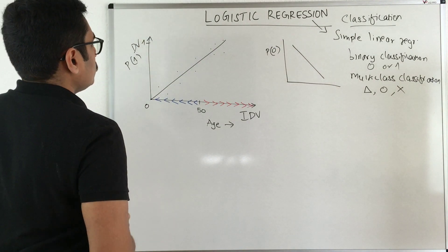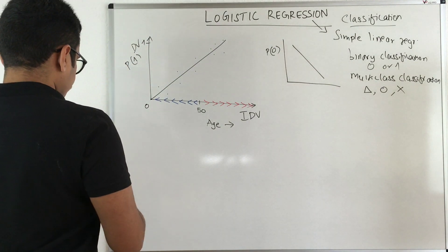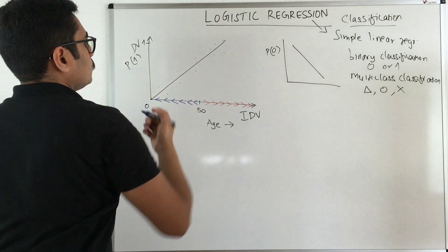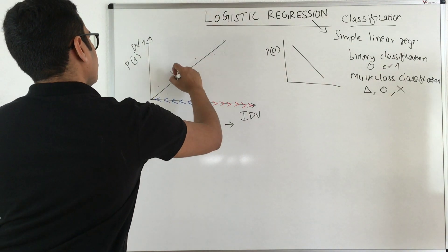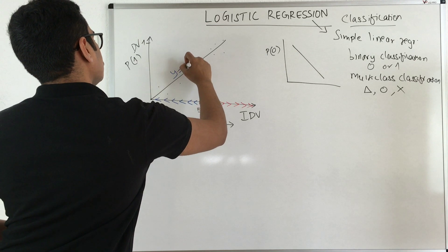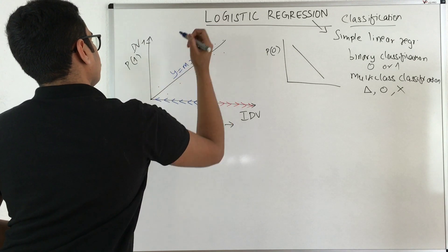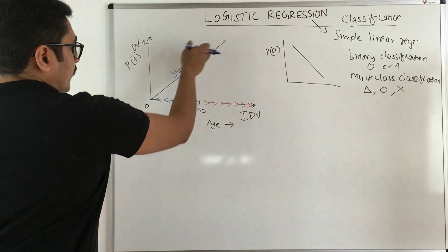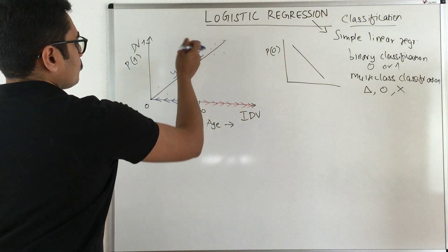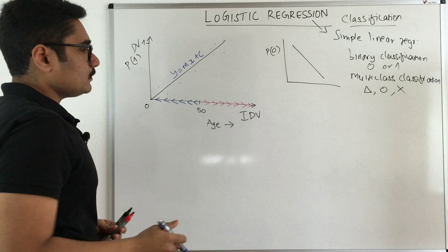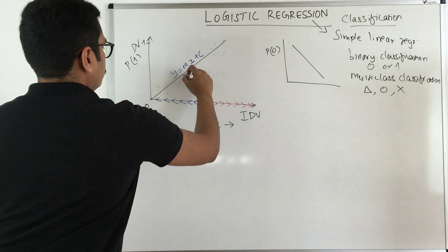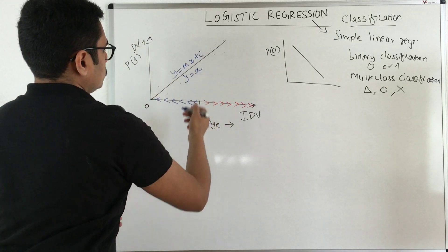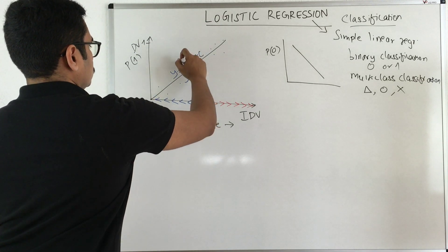For one particular instance, you have this equation of the line, given by y = mx + c. In this case, the y-intercept c is 0 and m equals 1, so this essentially becomes y = x. But for generalization, I'll consider y = mx + c.